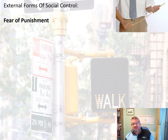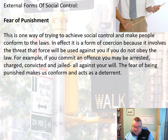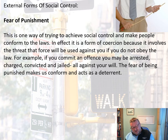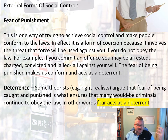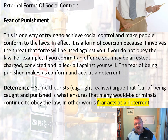Fear of punishment is also an example of external social control. It's a form of coercion because it involves a threat — the threat that force will be used against you if you don't obey the law. If you commit an offence, you can be arrested, charged, convicted, and jailed, all against your will. The fear of being punished often makes people conform, and it acts as a deterrent. Right realists in particular — think about rational choice theory from unit two — argue that fear of being caught and punished is what ensures many would-be criminals don't break the law.